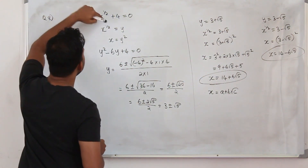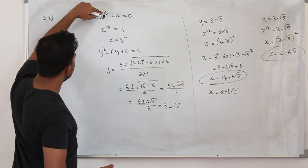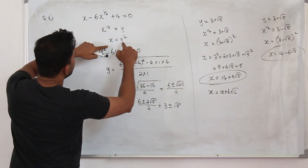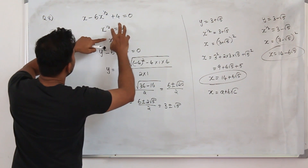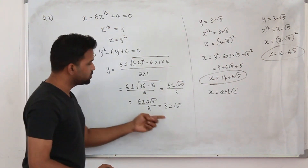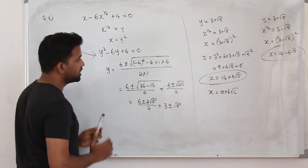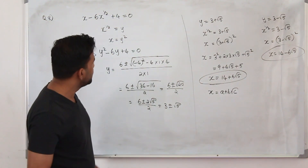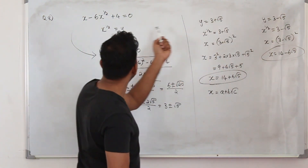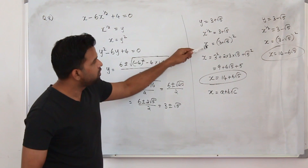It can be any equation — you might see powers like 3 over 2 or 5 over 2. Take the middle term as y and check whether y squared gives you the first term. If so, replace everything with y to get a quadratic equation, then solve it. Once solved, don't stop there — replace the two y values back using y equals x to the power half and find x, because that's what the question asks for.